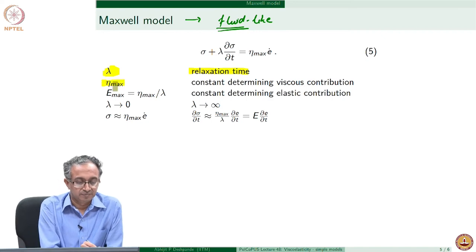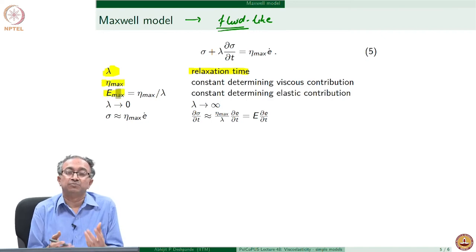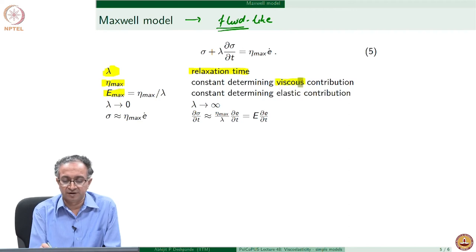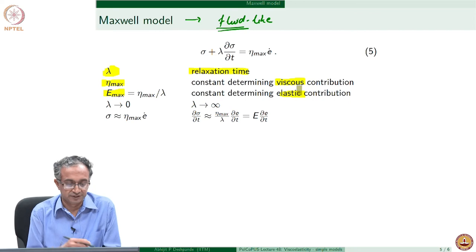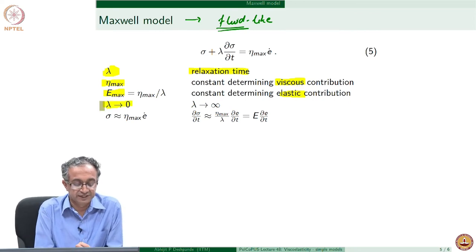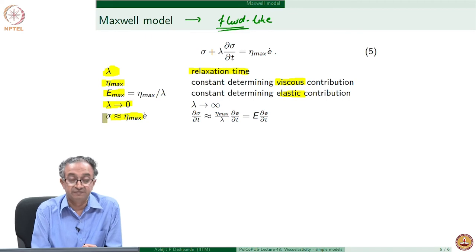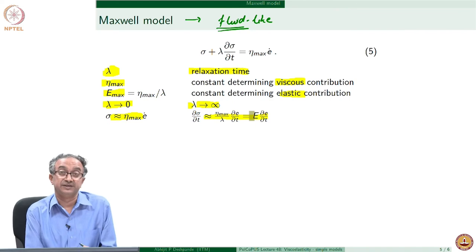Both η (viscosity) and E (modulus) are Maxwell model parameters that determine viscous or elastic contributions respectively. If λ is 0, we have a predominantly viscous response; if λ is infinity, we have a predominantly elastic response.